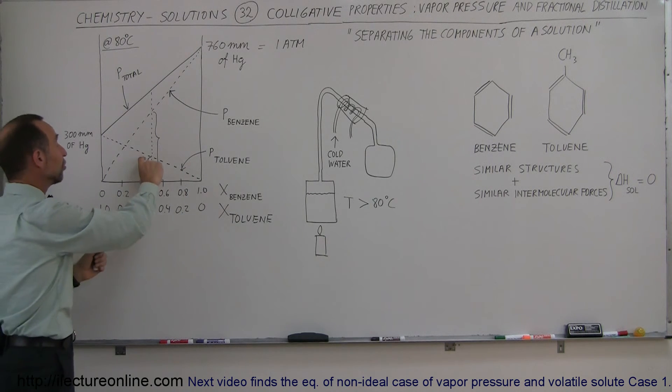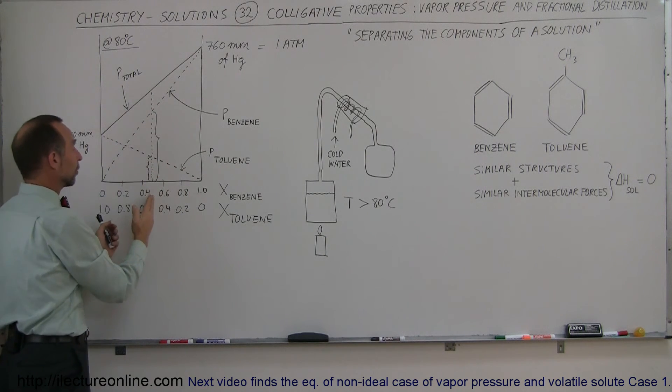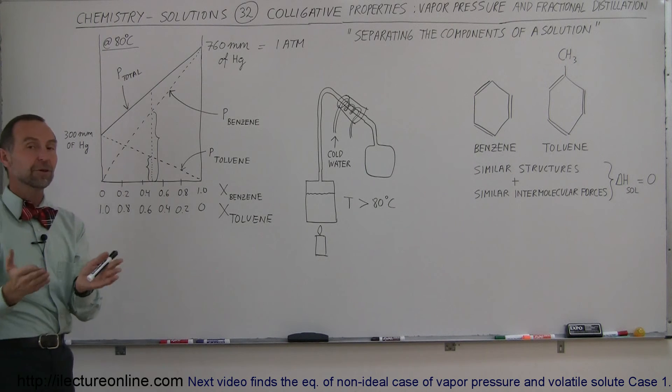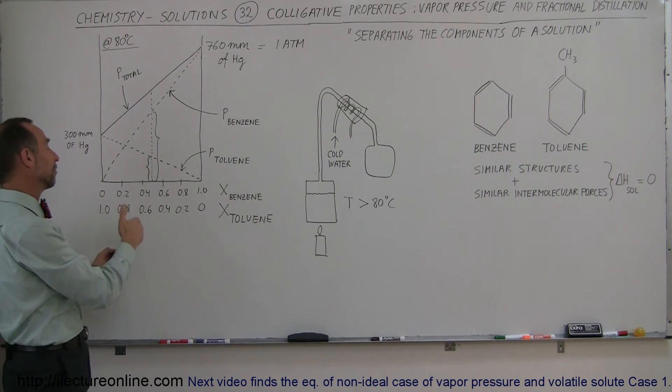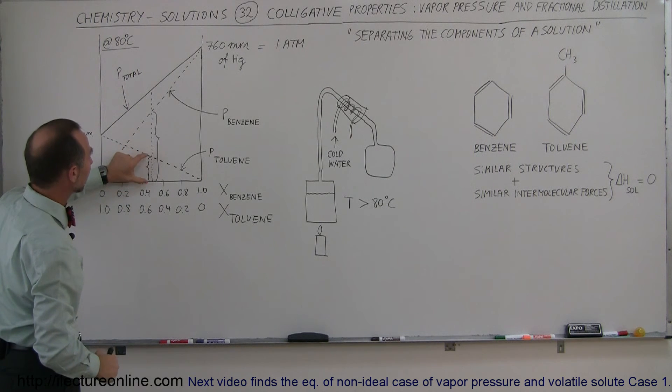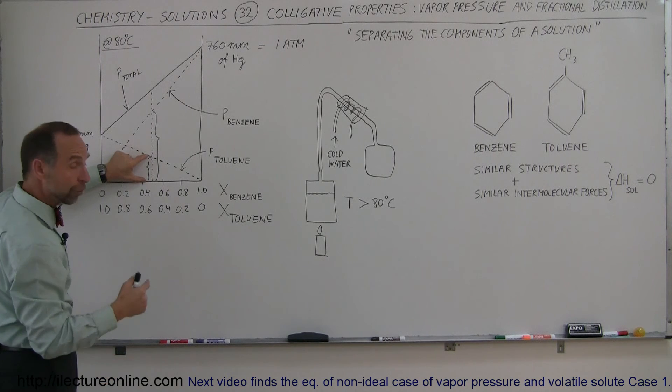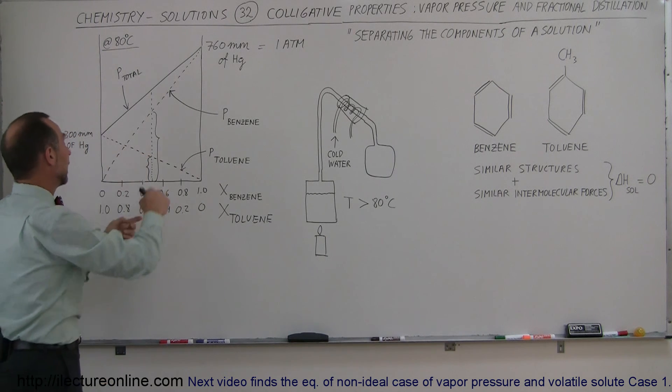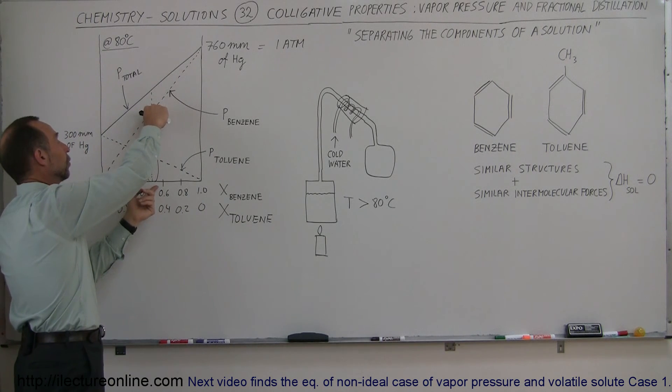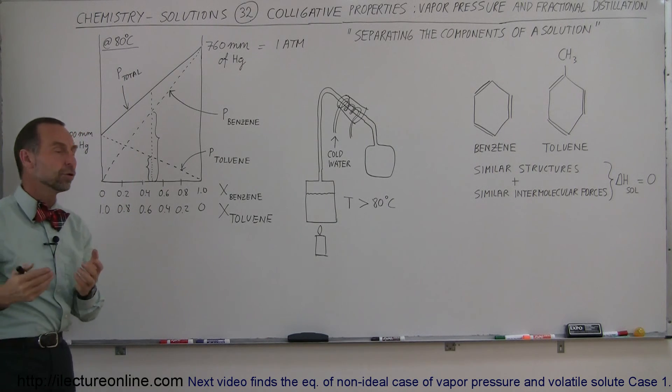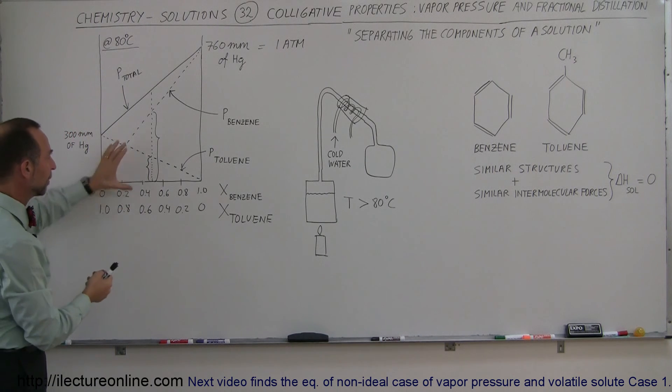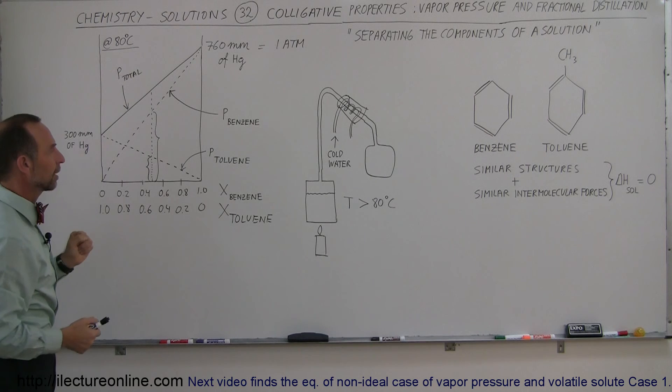Anywhere in between, it's simply a sum of the two vapor pressures together. At the halfway point, when half the moles are benzene and half the moles are toluene, this would be the component of the vapor pressure due to the toluene, and this would be the component due to the benzene. Simply add them together, that gives you the total pressure here.